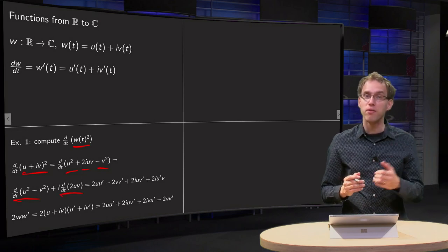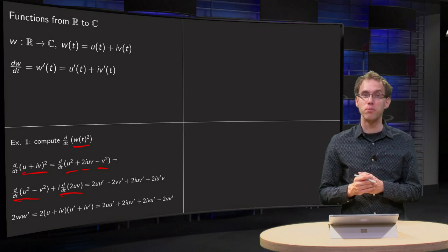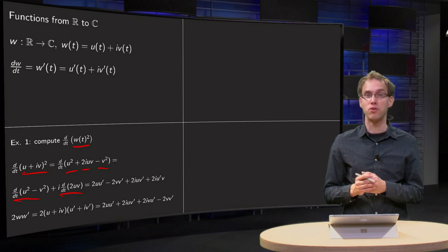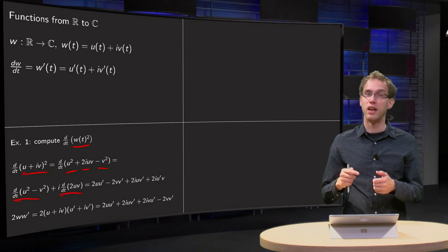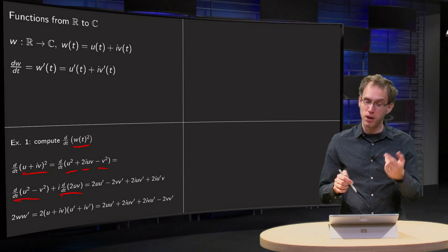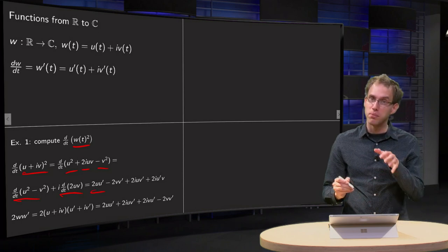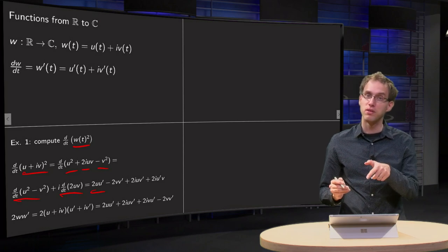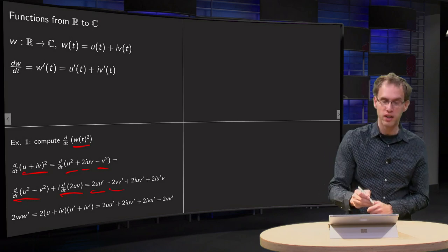For those terms we can use results from real calculus. The d/dt of u² − v² equals 2·u·u′. To differentiate −v², we get −2·v·v′ with the additional minus sign.